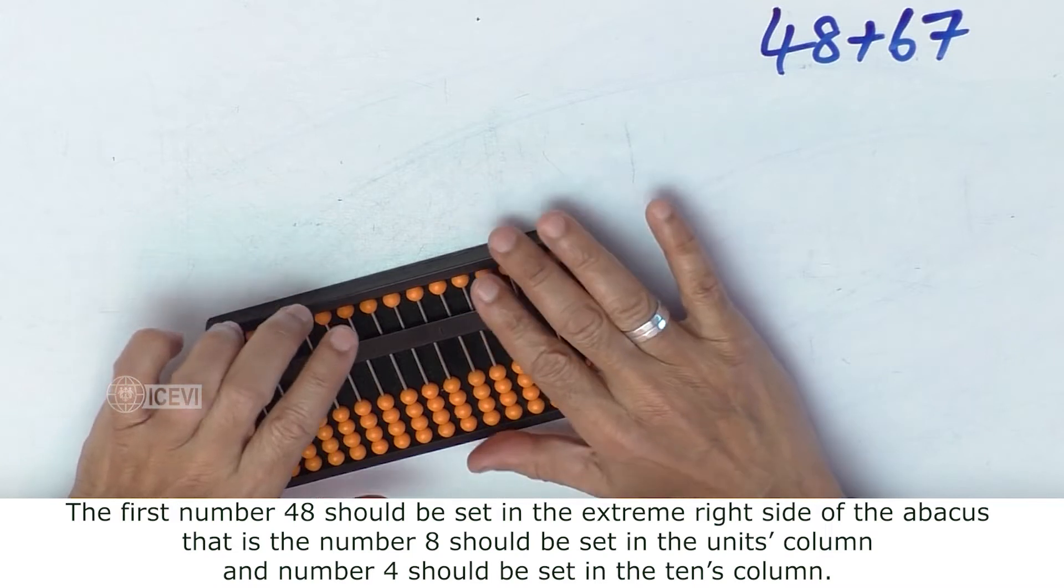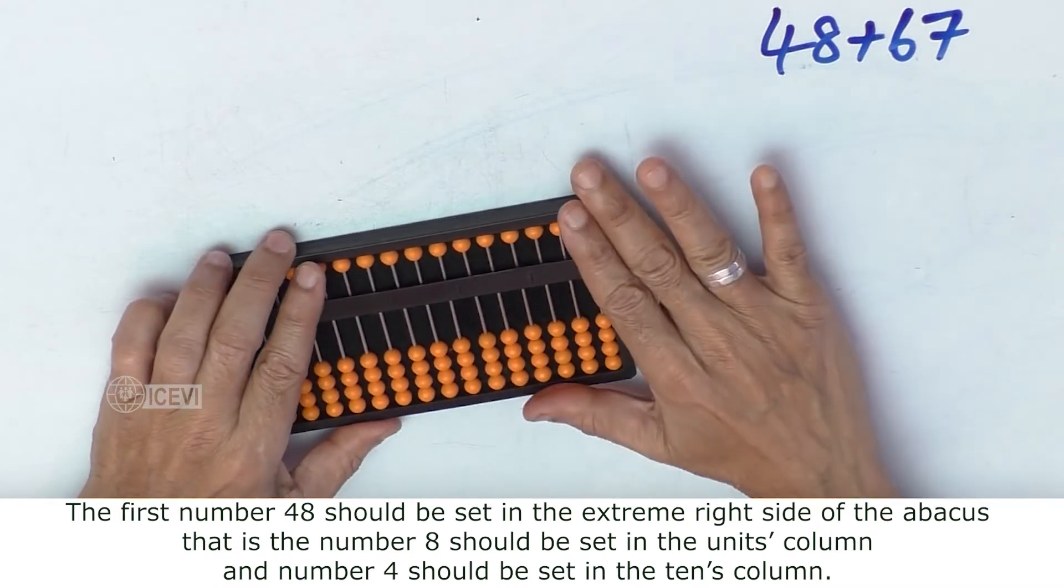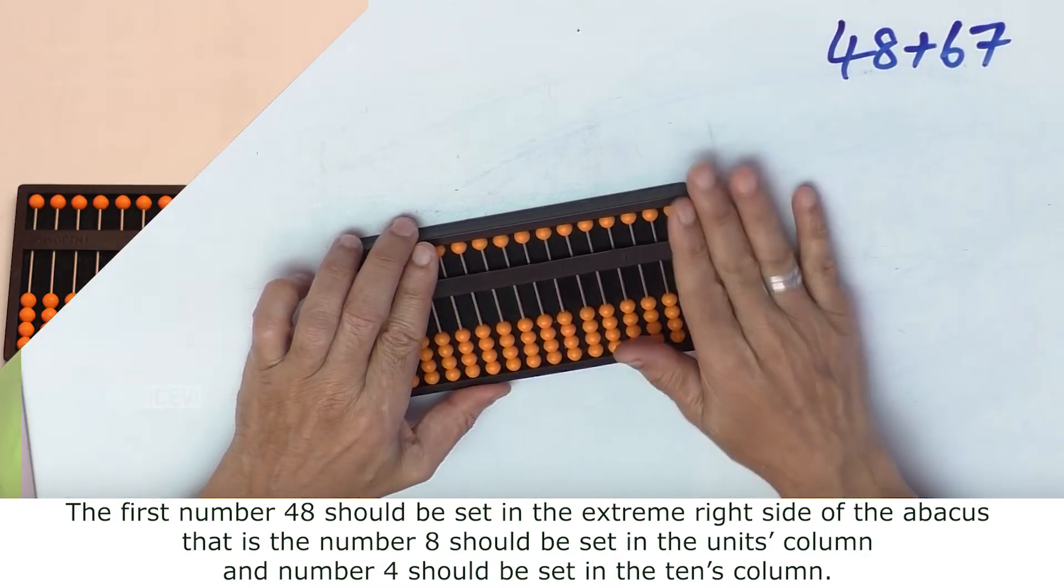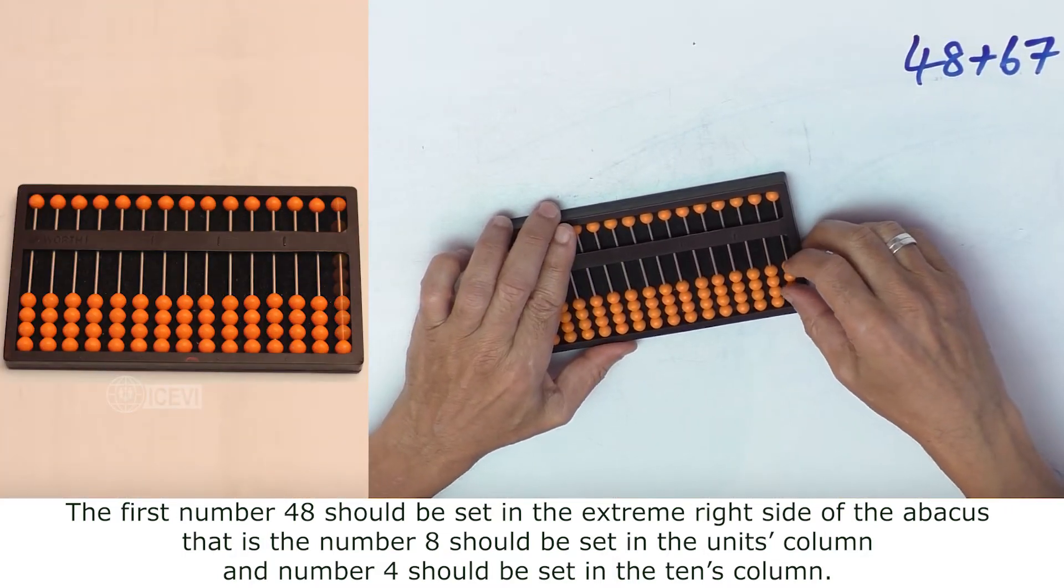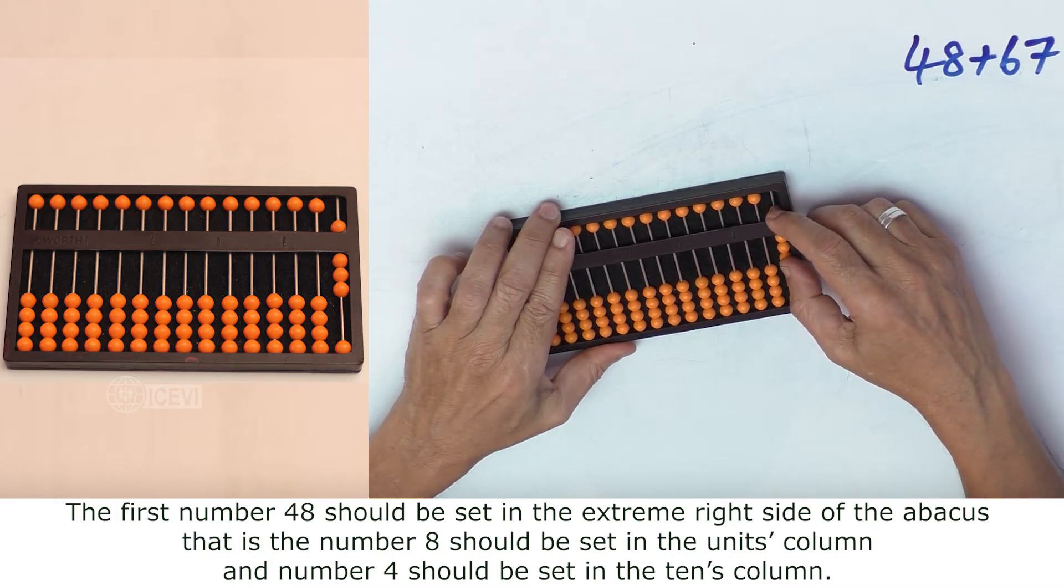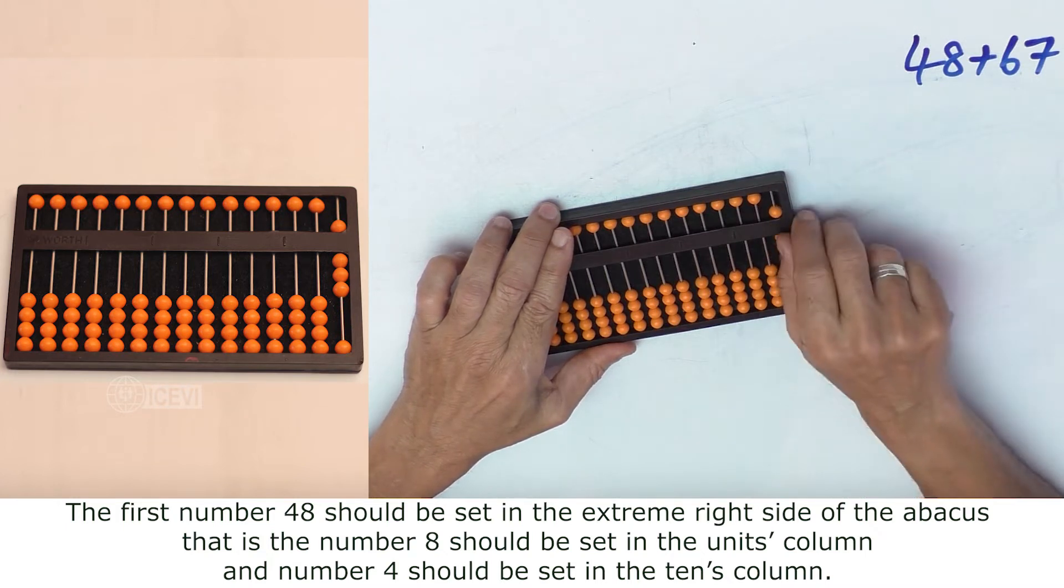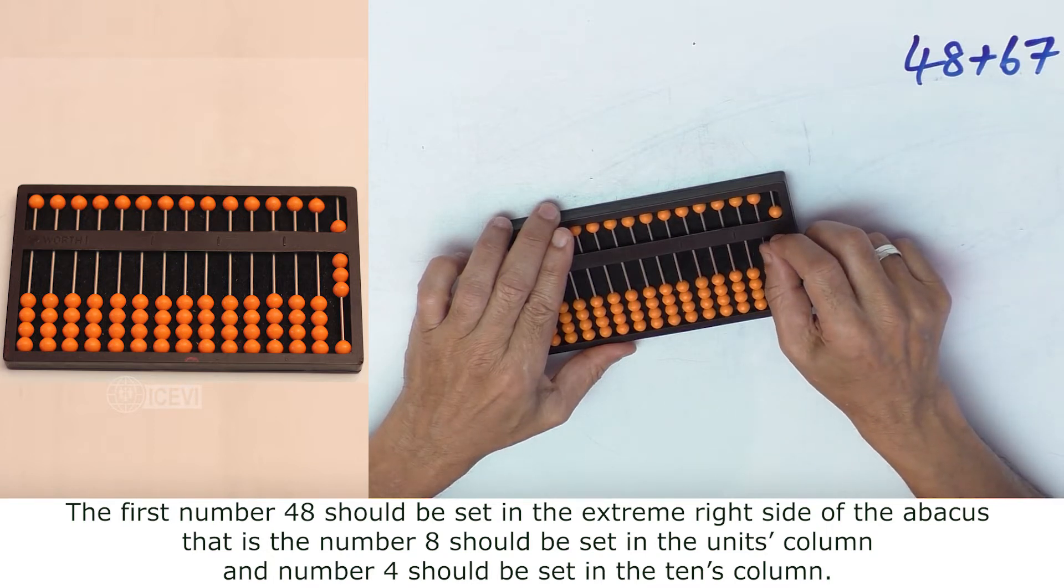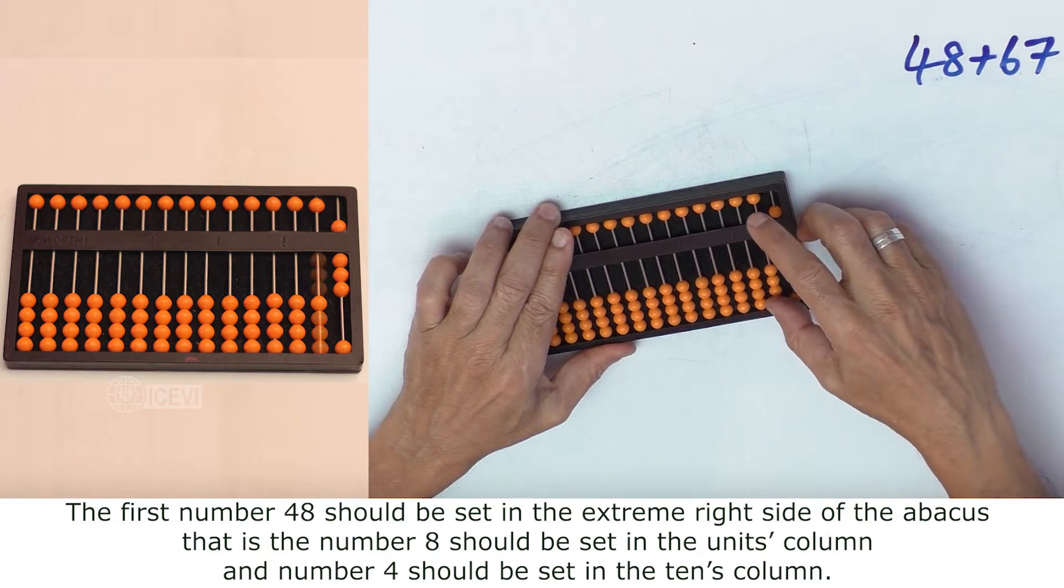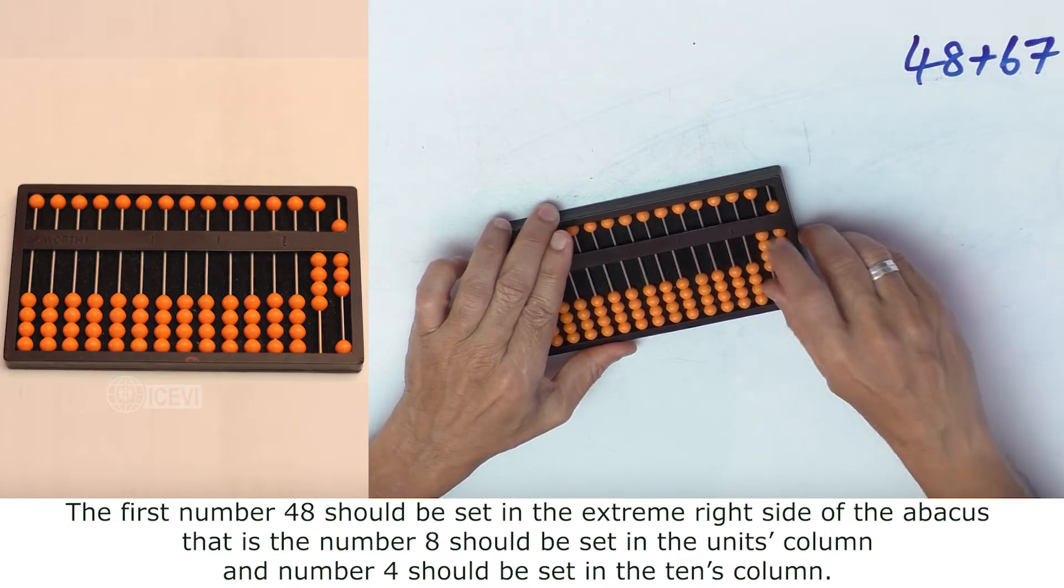The first number 48 should be set in the extreme right side of the abacus. That is, the number 8 should be set in the units column, which is the right end column, and the number 4 should be set in the tens column, which is the column on the left side of the units column.